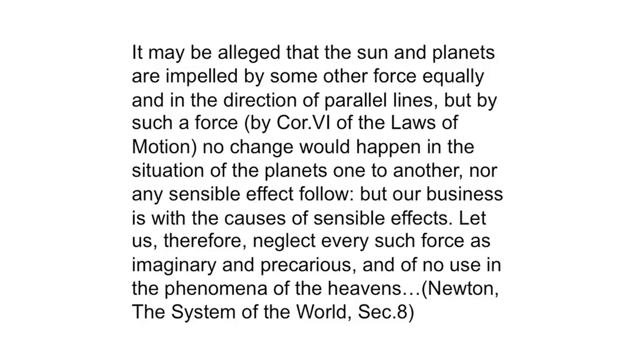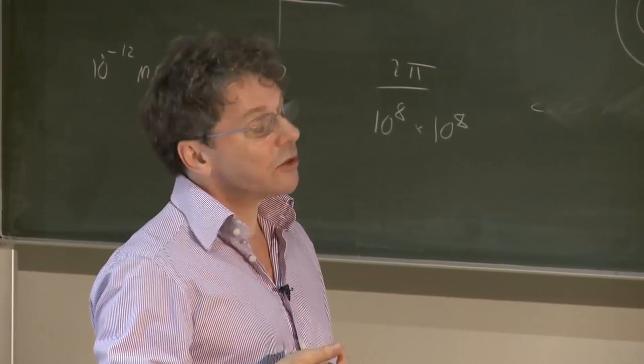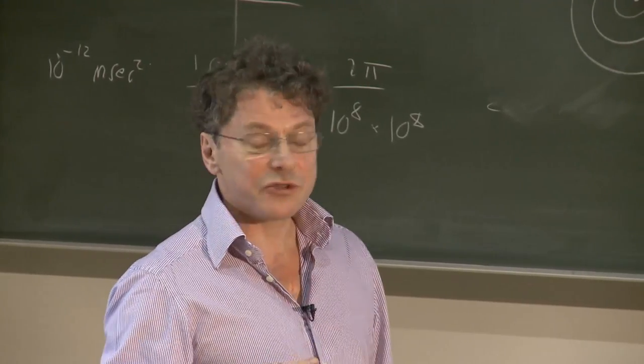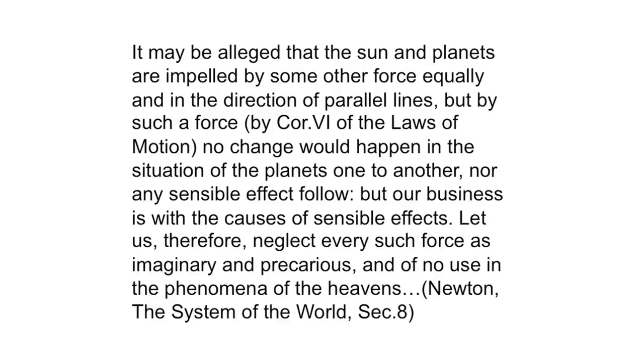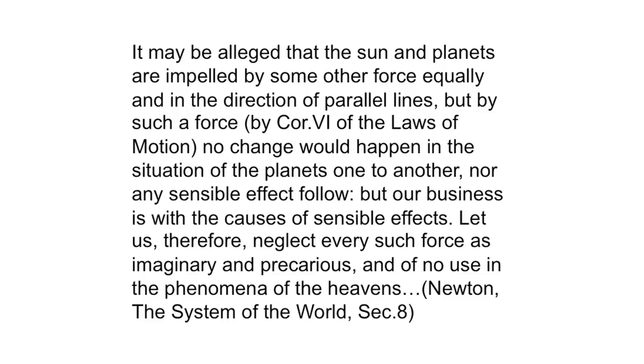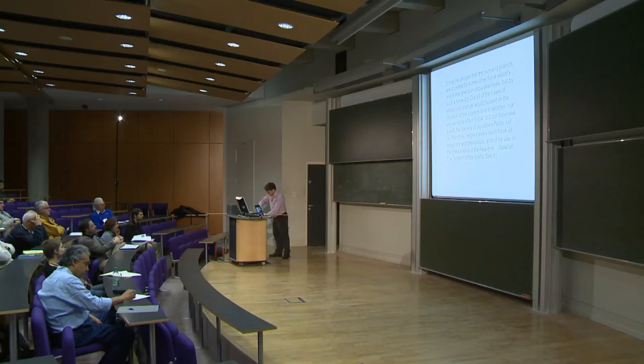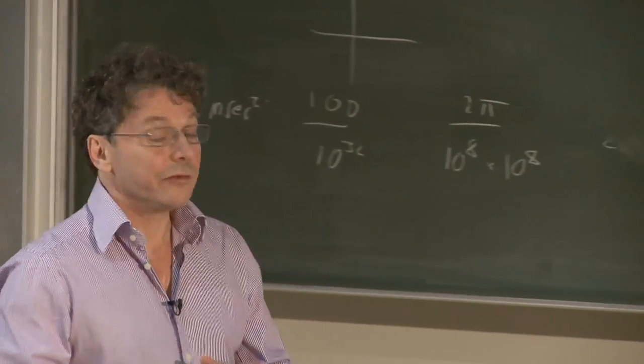Newton actually said so. He didn't say it in Principia. He said this in a book that he wrote prior to Principia, a kind of an informal version of Book 3, called The System of the World, which was never published in his lifetime. It may be alleged that the sun and planets are impelled by some other force equally and in the direction of parallel lines, but by such a force, by corollary 6, no change would happen in the situation of the planets one to another, nor any sensible effect follow. But our business is with the causes of sensible effects. Let us therefore neglect every such force as imaginary and precarious, and of no use in the phenomena of the heavens. This is my evidence that Newton knew exactly what he was doing, but wasn't really prepared to come out and say it.